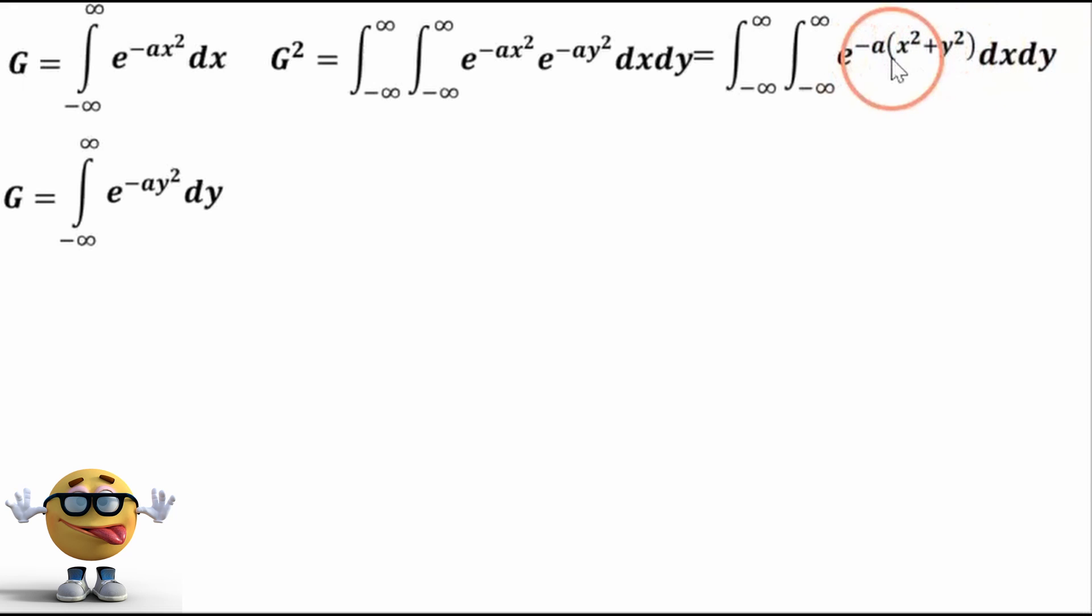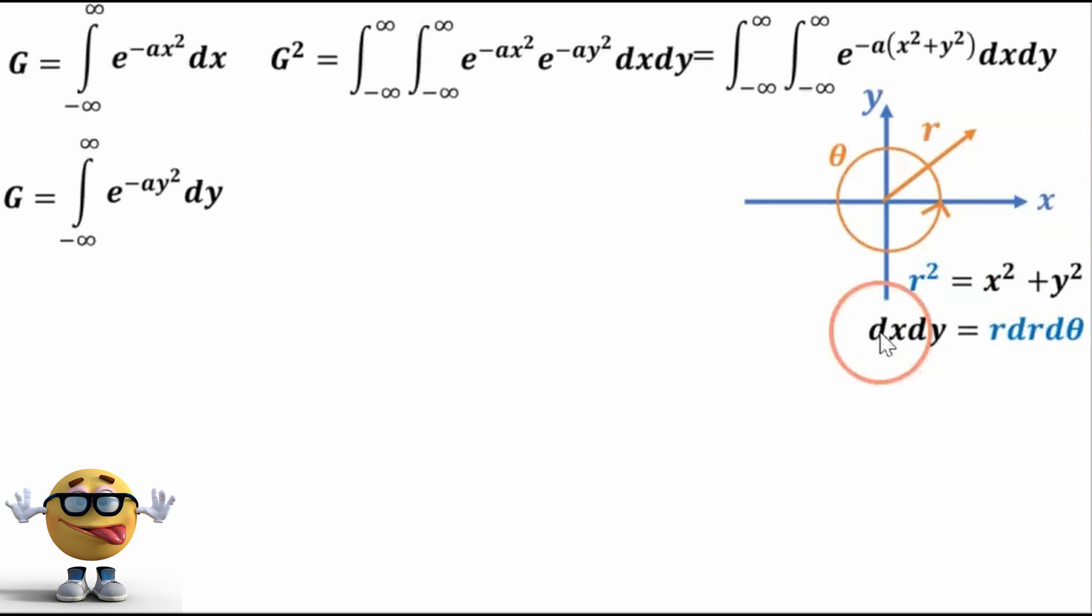Now, this is in terms of x and y, right? But we could also make things in terms of r and theta by changing to polar coordinates. And if we do that, r squared is equal to x squared plus y squared. And I can post in the comments if you want me to, but x squared, y squared in polar coordinates is r dr d theta.